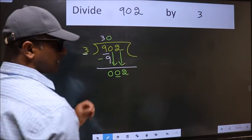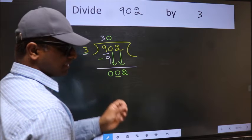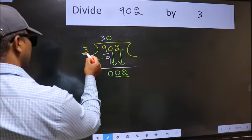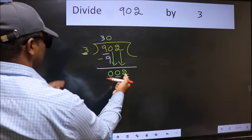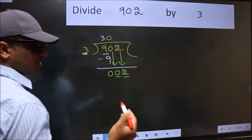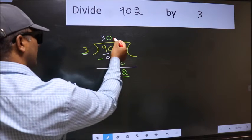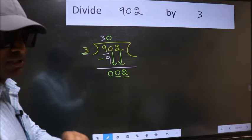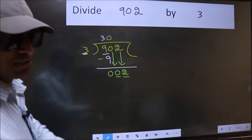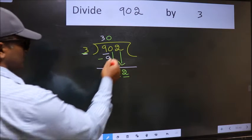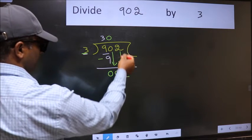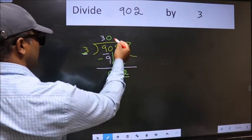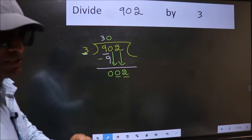After this step, the mistake happens. And the mistake is this: here we have 2 and here 3. 2 is smaller than 3. So what many do is they directly put dot, take 0, which is wrong. Why is it wrong? Because just now you brought this number down, and in the same step you want to put dot and take 0, which is wrong.